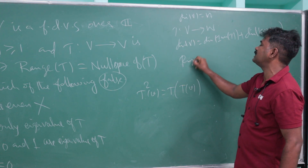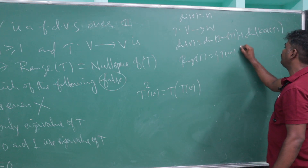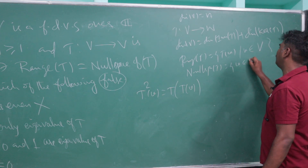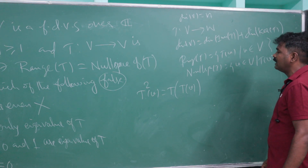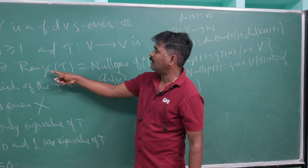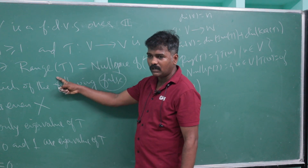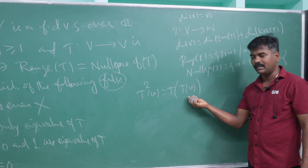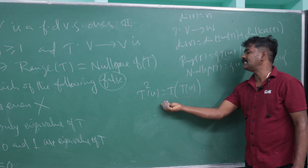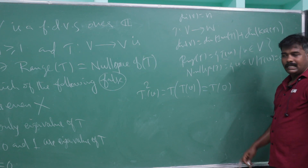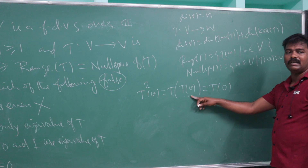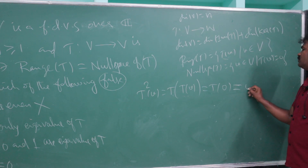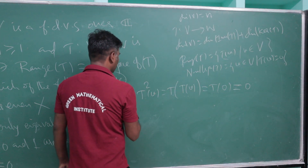The range of T equals the null space of T. Any element of the range is of the form T(v), and since range = null space, T(v) belongs to the null space. That means T(T(v)) = 0. This holds for every v in V, so T² is identically zero.